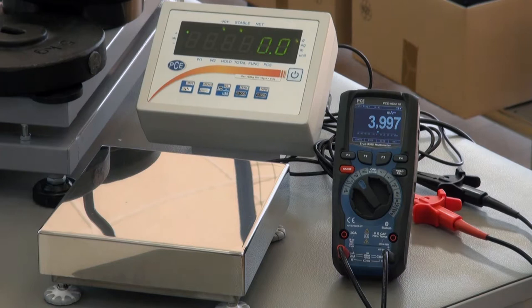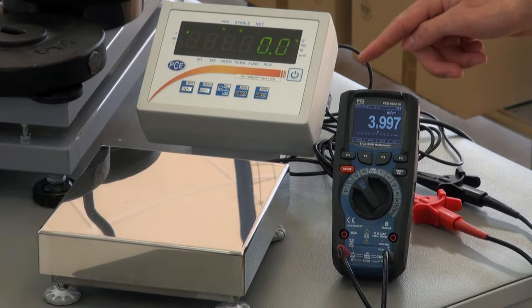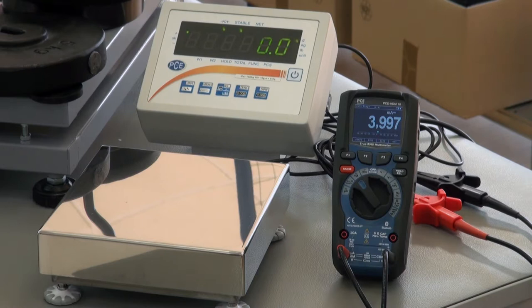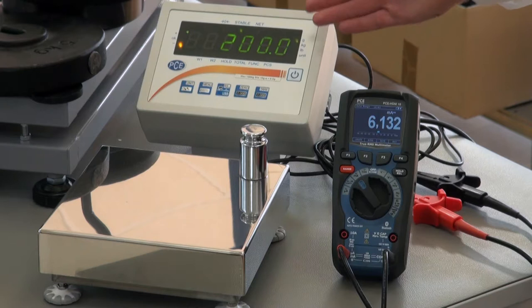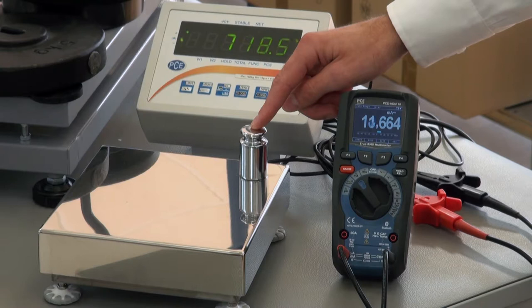Here we have a platform scale which has a 4 to 20 milliamp interface. That means when the scale isn't loaded, with zero shown in the display, we can see at the exit around 4 milliamps. By putting load onto the scale, not only the value of the weight changes but also the analog interface.